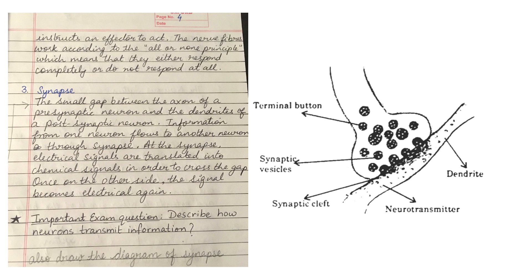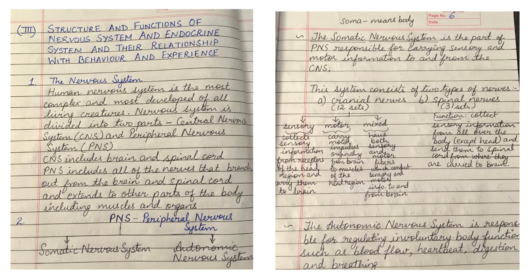At this point, there could be an important exam question: describe how neurons transmit information. In addition to the text, it will be helpful to draw a diagram of the synapse to make the answer more descriptive. Now we will look at the different parts of the nervous system and their relationship with behavior and experience.